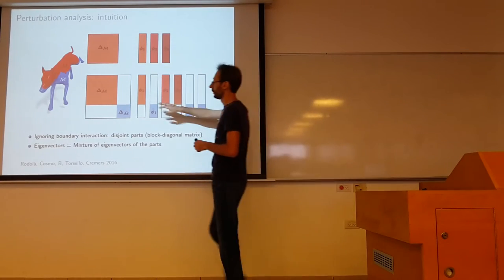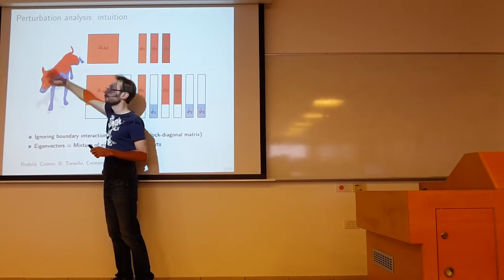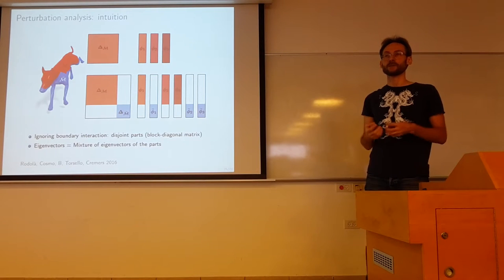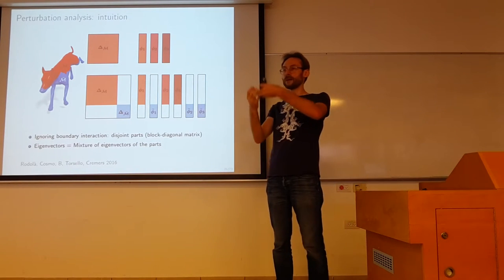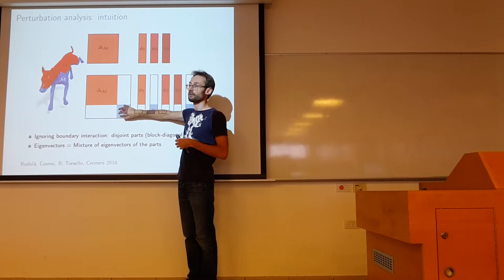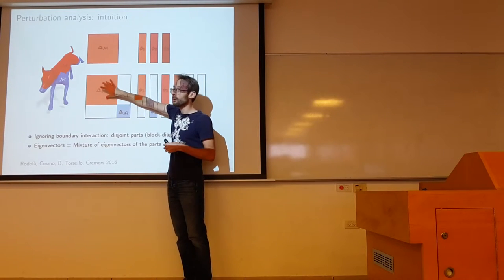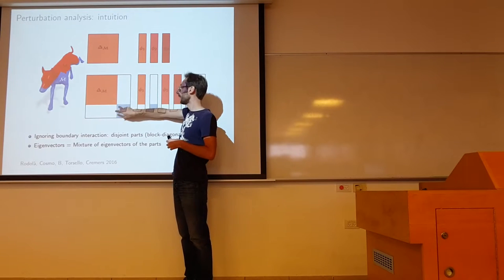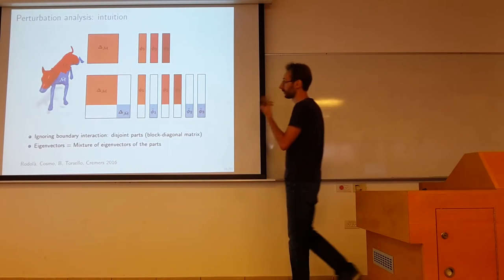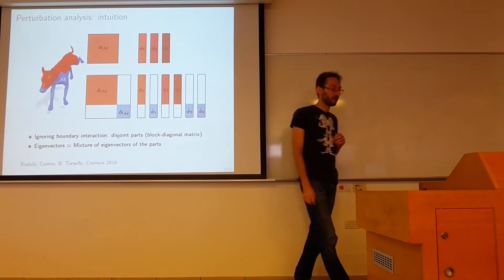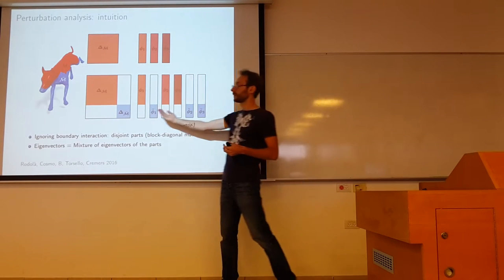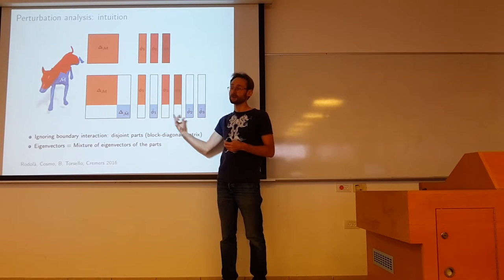Let's try to understand where this comes from. Consider a simple example: take the dog shape and cut it into two parts — the red part and the blue part. Assume for simplicity that they are disjoint. The Laplacian of the dog shape in this case consists of two blocks in block-diagonal form: the red block — the Laplacian of the red part — and the blue block — the Laplacian of the blue part. We know about eigenvectors of a block-diagonal matrix that it is an interleaving of the eigenvectors of each of the blocks, ordered by increasing eigenvalue.